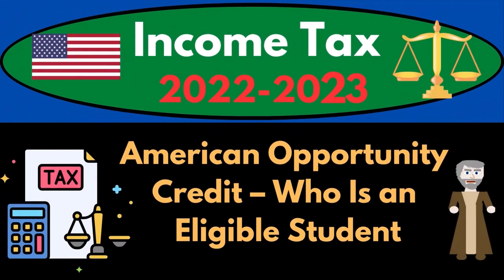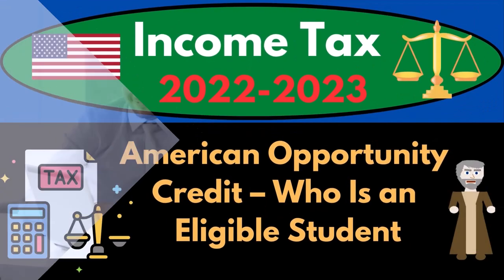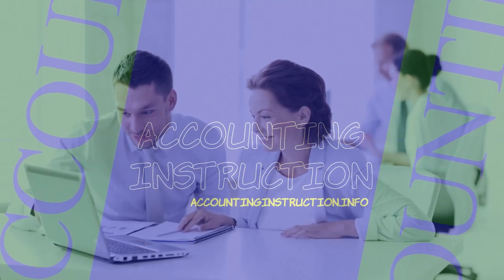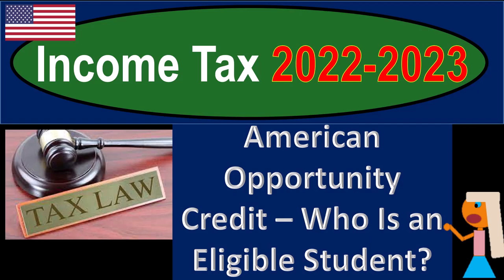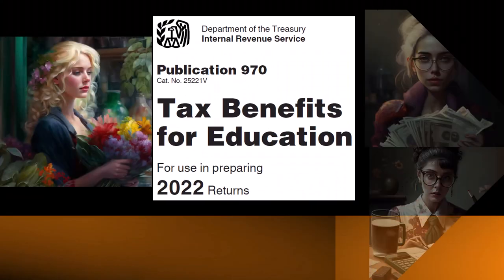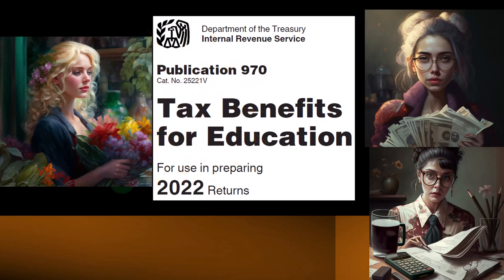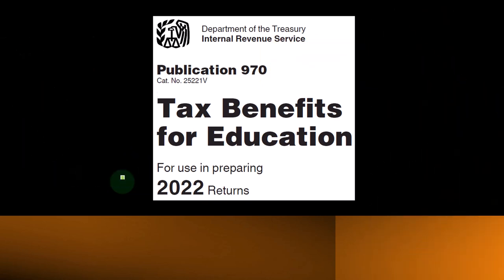Income Tax 2022-2023: American Opportunity Credit — who is an eligible student? Let's do some wealth preservation with some tax preparation. Most of this information comes from Publication 970, Tax Benefits for Education, Tax Year 2022, which you can find on the IRS website, irs.gov.